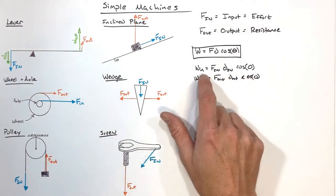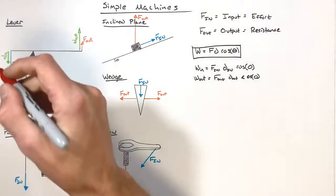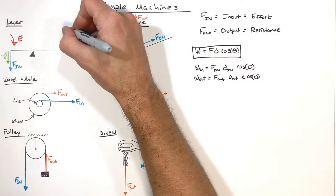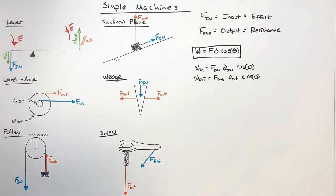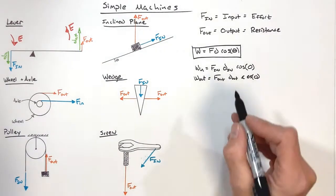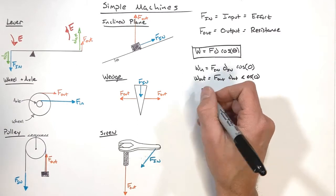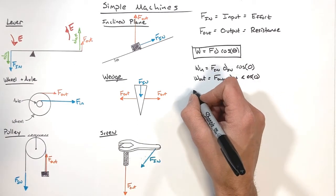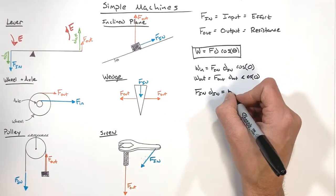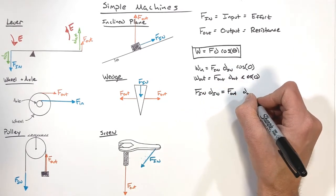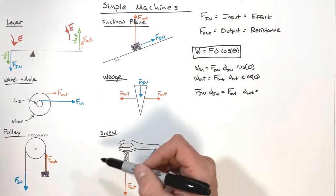The important thing to remember is energy comes in and energy comes out. Ideally, in a perfect world, the amount of energy that goes into this lever is going to come out. We have things like friction and inefficiencies, but if the energy in equals the energy out, then these two are equal to each other. If we put in some force into a simple machine over some displacement, we're going to get some force out over some displacement out.